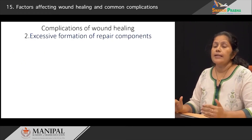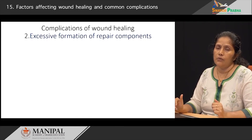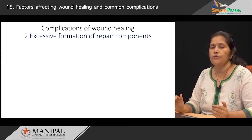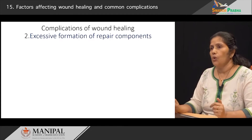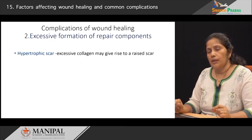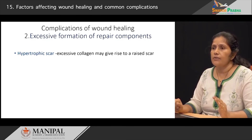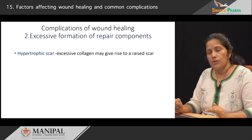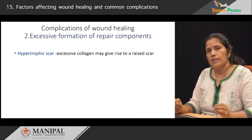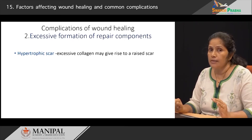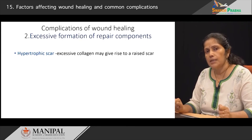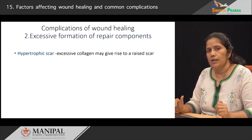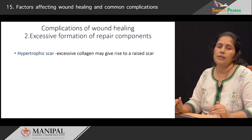Now let us see what happens if there is excessive formation of the repair components. If there is excessive formation of the wound repair components — that is, if there is excessive formation of granulation tissue — the first complication that we can see is what is known as a hypertrophic scar. This is because of excessive collagen formation which gives rise to a raised scar. Such hypertrophic scars are very commonly seen in patients post burns or thermal injury where the injury is quite deep, going deep into the deeper dermis, and the excessive collagen tissue formation results in a scar which rises higher than the surrounding tissues.